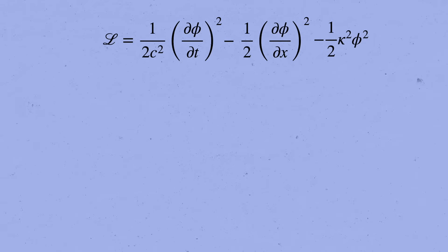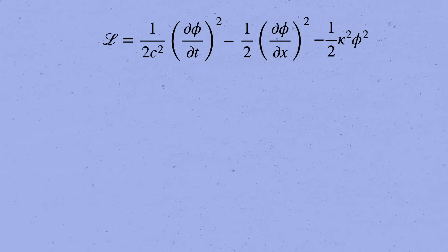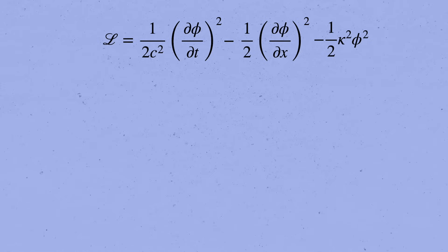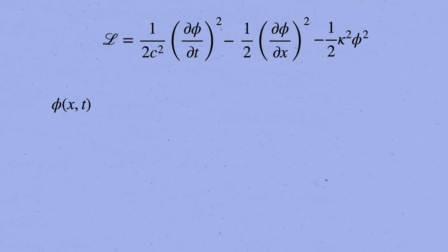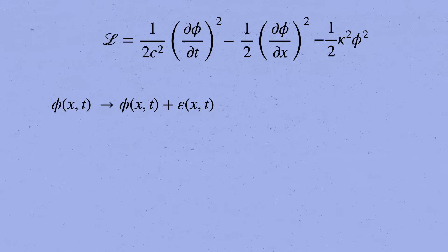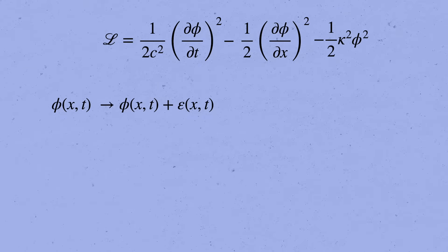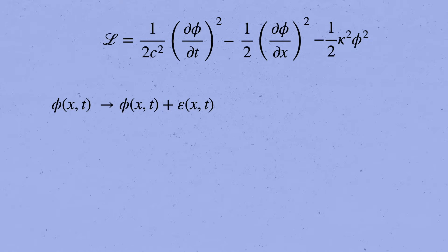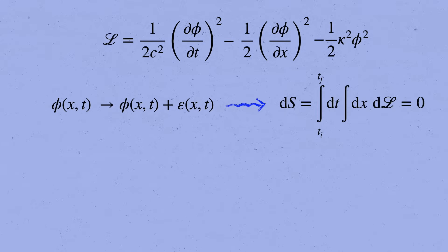Next, we want to figure out its equation of motion by applying the principle of least action, very similarly to what we did for a particle. We start with some field configuration, phi of x and t, and then we make a little variation of it by adding on an infinitesimal field, epsilon of x and t, that deforms phi by a little bit. If phi is going to be a stationary configuration of the action, then s had better not change to first order in epsilon when we make any such variation.